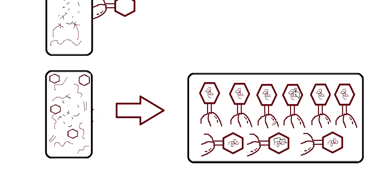When the virus is packaging its genetic material into its capsid — the head portion — it sometimes by mistake also includes some fragments of the bacterial genetic material. This makes a viral particle carry that portion of the bacterial genetic material with it.